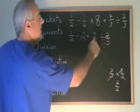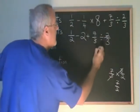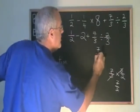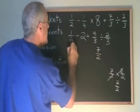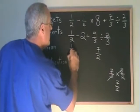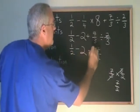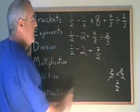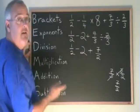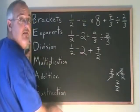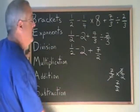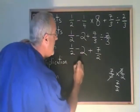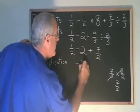So the answer to that division is 7 halves, and it gets written in place of that division on the next line. Everything else is copied down. Now we have a subtraction and an addition — again, they're in a tie and we do the leftmost one first. So we're doing this subtraction: 1 half minus 2 is negative 3 halves.